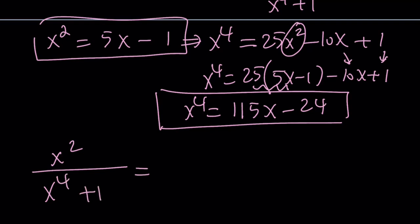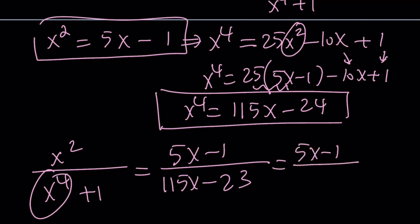And this should be familiar to you. x squared is going to be replaced with 5x minus 1. x to the 4th is going to be replaced with 115x minus 24 plus 1 is going to give us minus 23. Make sense? Hopefully it does. Now we can go ahead and do the same thing. Factor out 23.